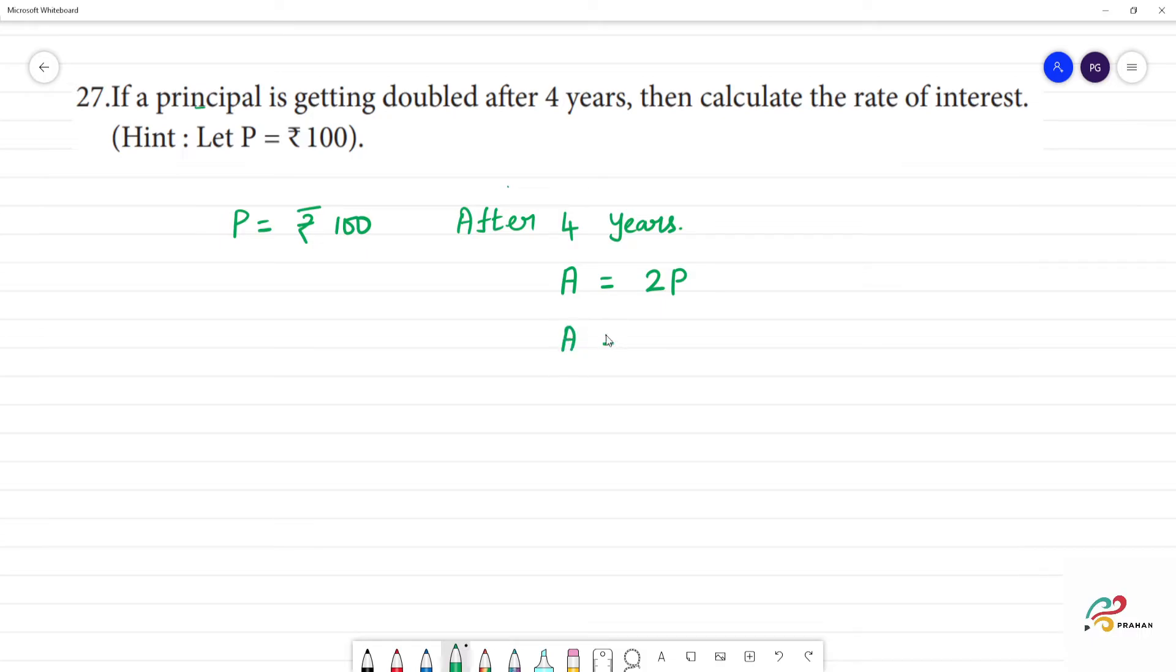So, the amount is equal to how much? 2 into 100. The number P is 100. So, the amount is equal to how much? 200 rupees. Okay, amount is 200 rupees.